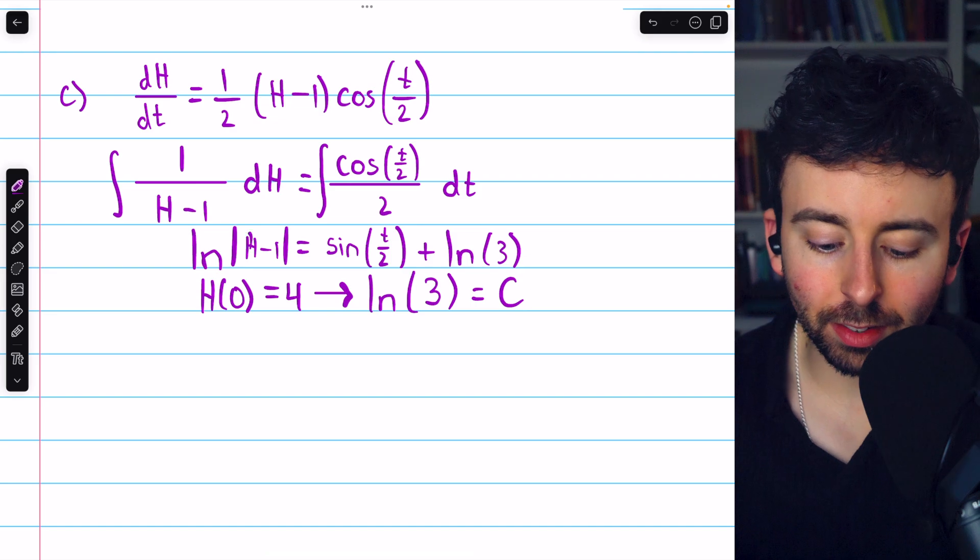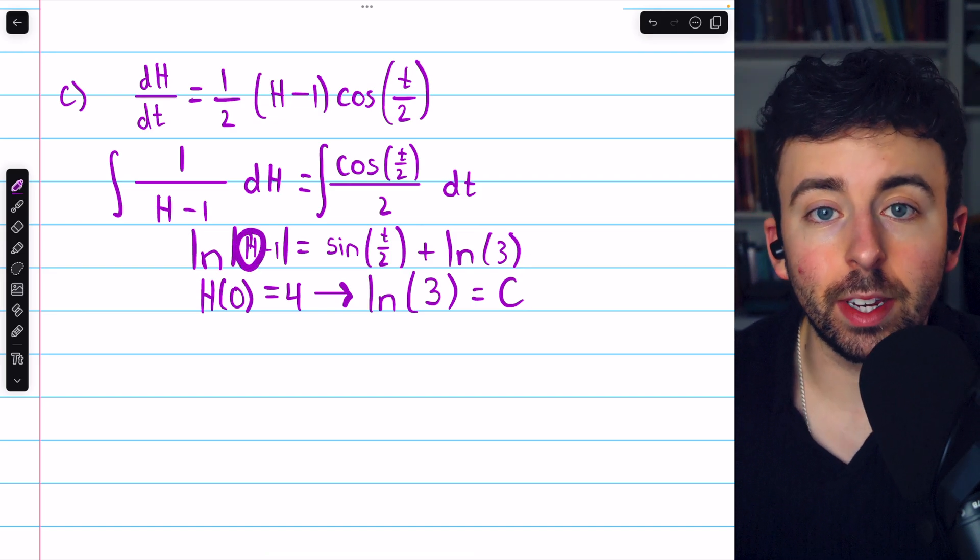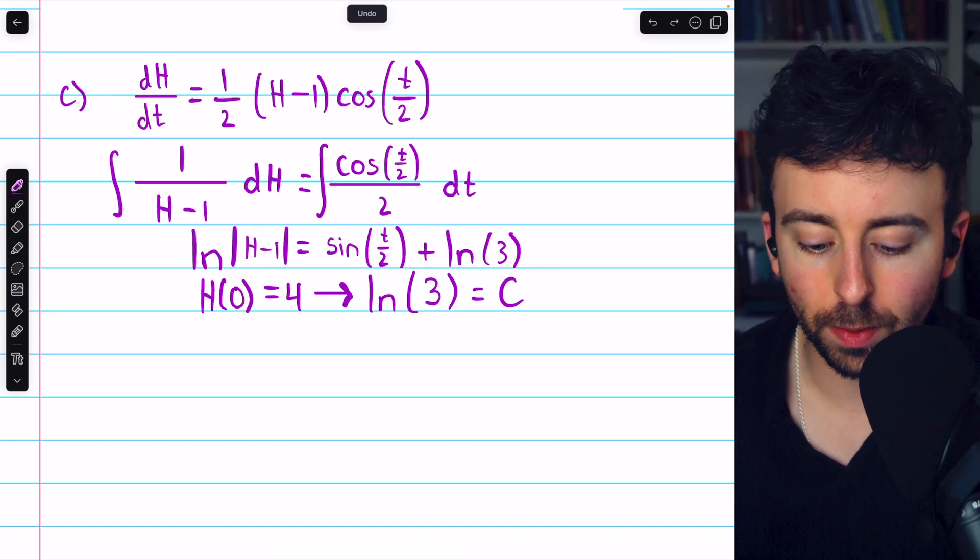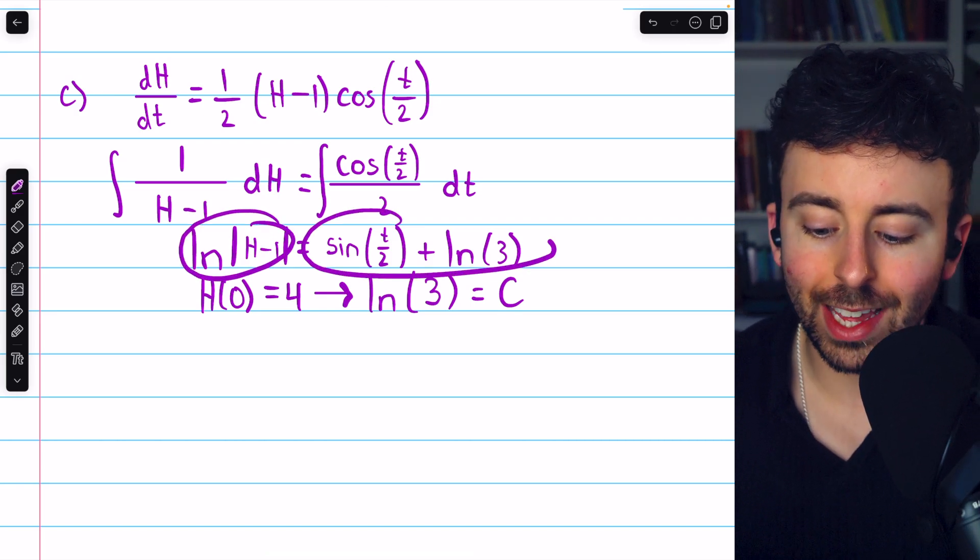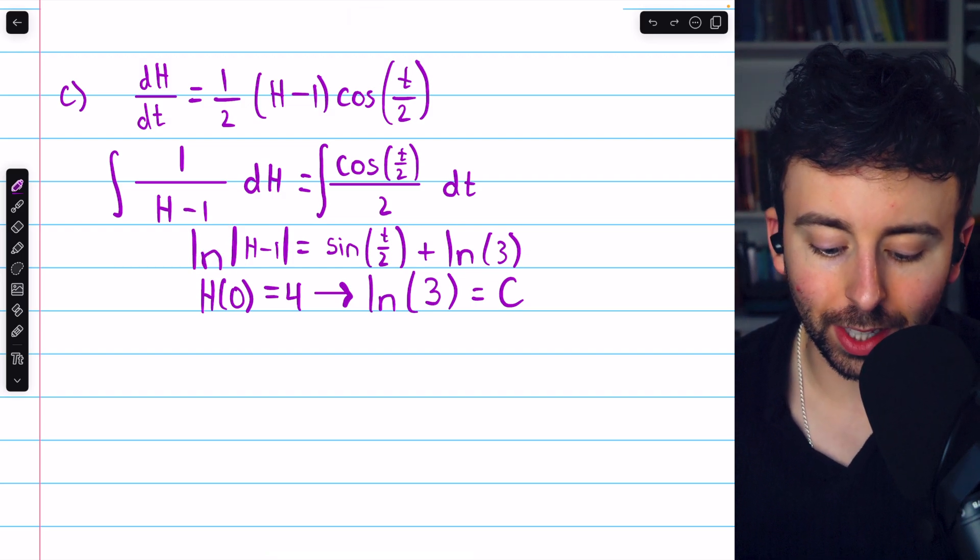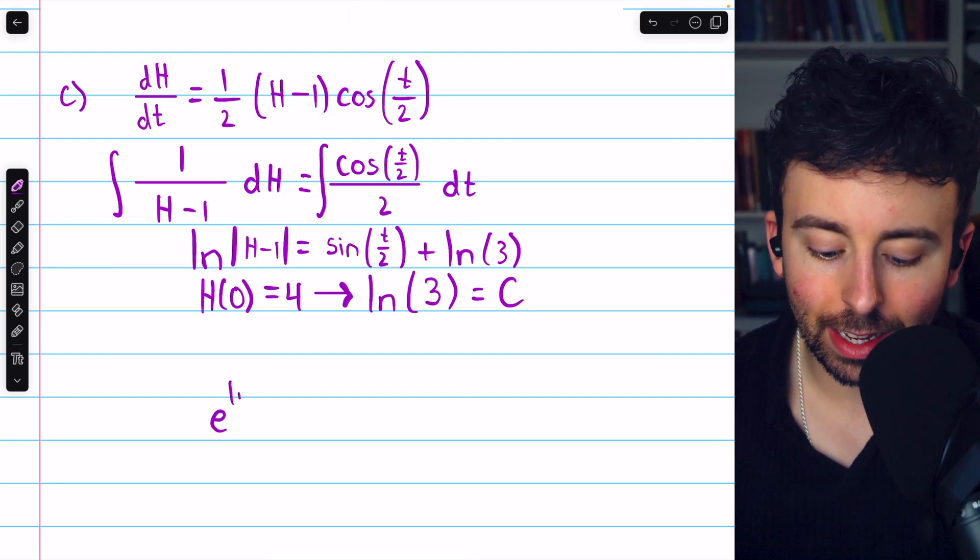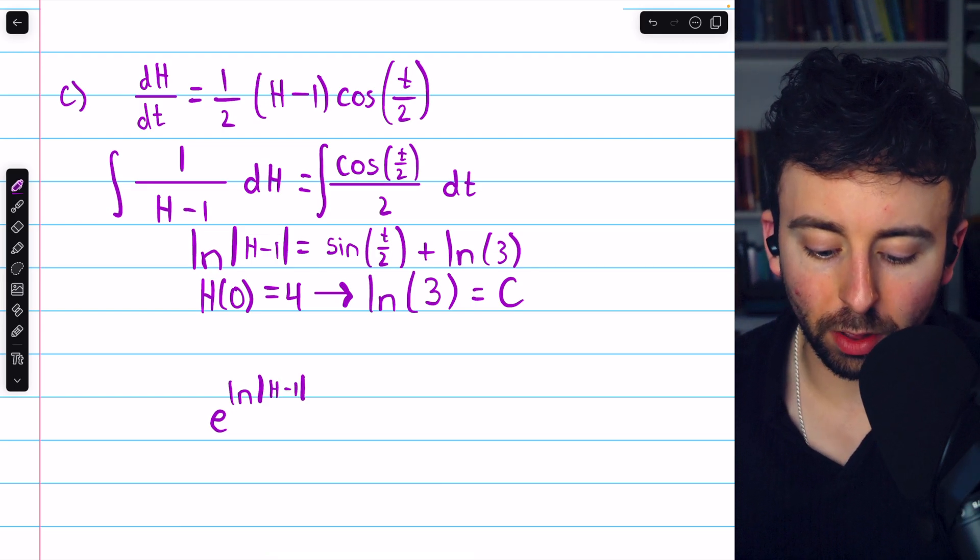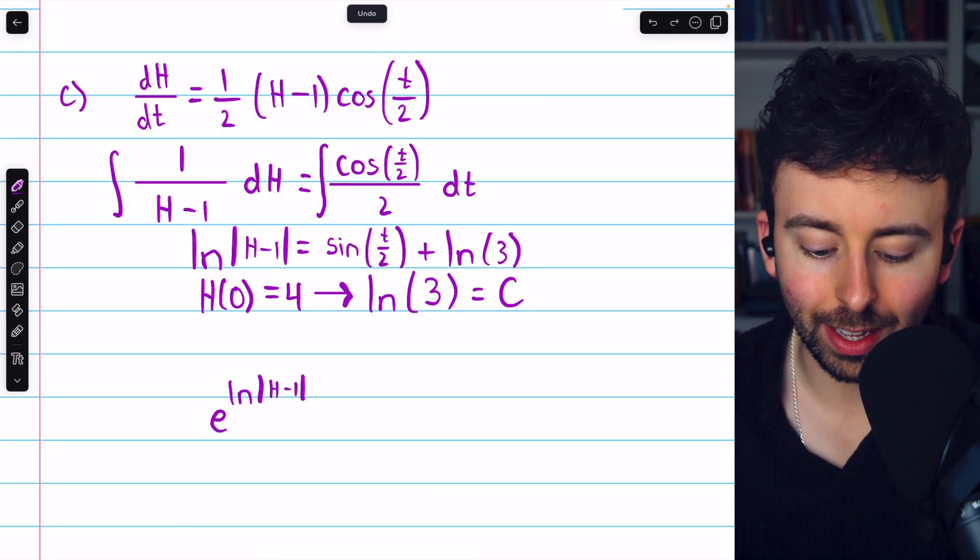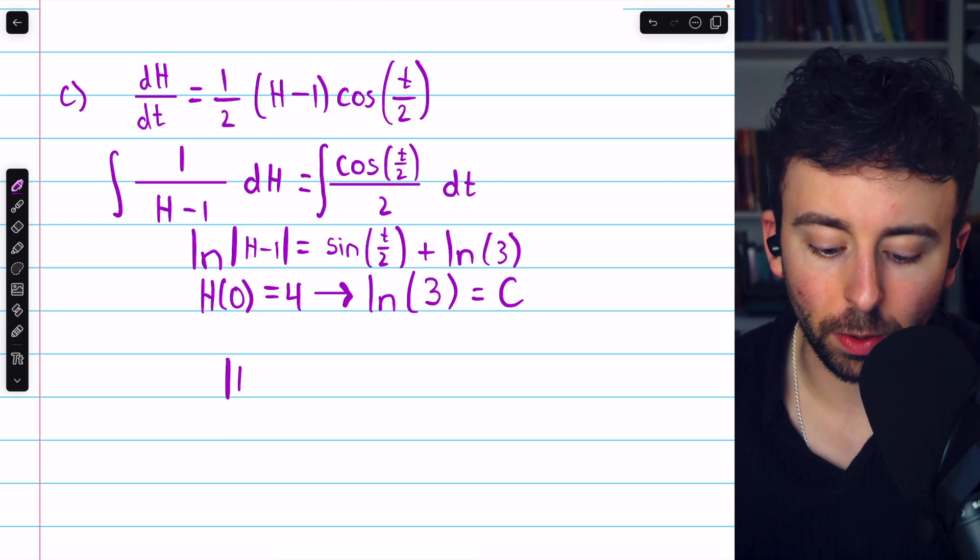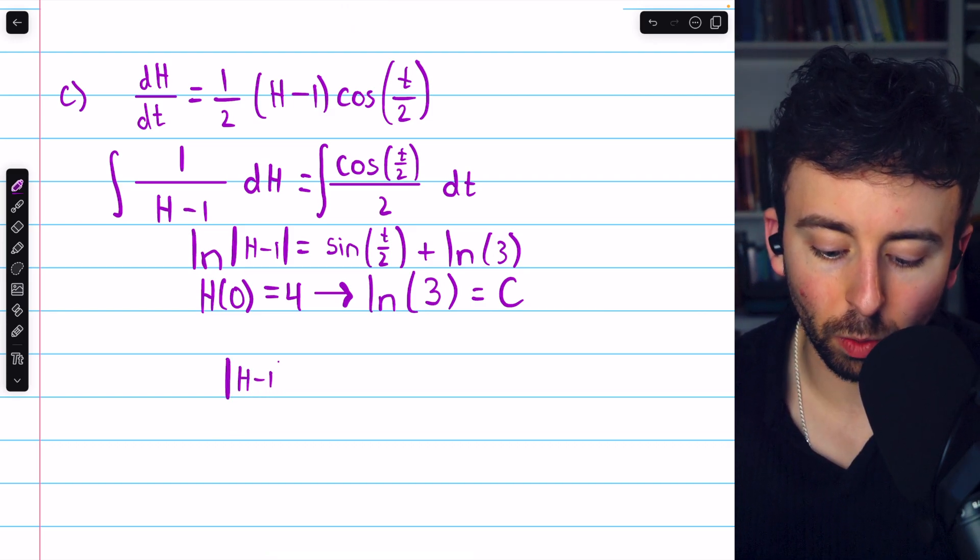Back in this original equation where we had c, we can just go ahead and replace that c with the natural log of three. Now, we're trying to solve for h to find the particular solution. What is that function h satisfying this differential equation? So, we're going to exponentiate the left and the right sides in order to get rid of that natural log. On the left, we're going to have e to the natural log of (h minus one). And, of course, the whole point is that the e and the natural log cancel out. So, let's just go ahead and write the absolute value of (h minus one).